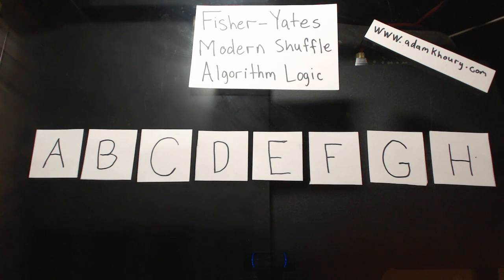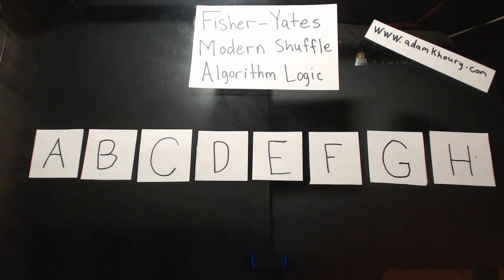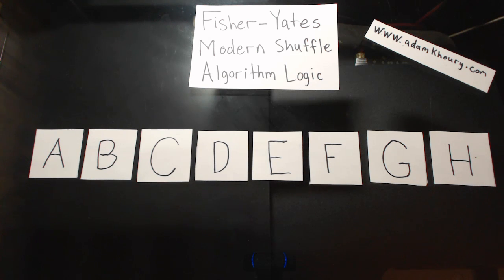Hello everybody! In this programming exercise, we'll demonstrate the concepts behind the Fisher-Yates Modern Shuffle algorithm. Using this physical example on the table, we're going to convey the logic behind the algorithm and discuss the concept, then we're going to write the logic in JavaScript programming to add an array shuffle method to JavaScript's array object.